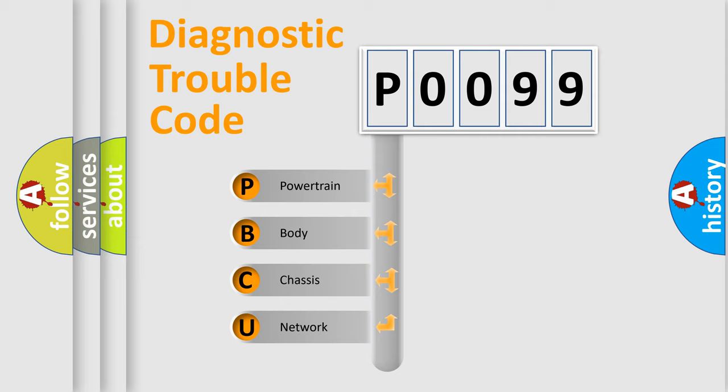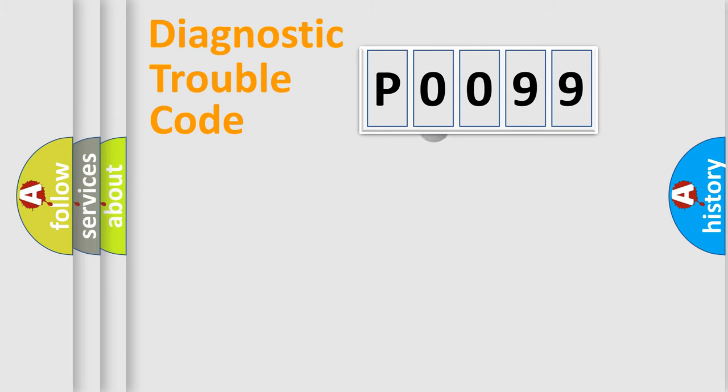We divide the electric system of automobile into four basic units: powertrain, body, chassis, and network. This distribution is defined in the first character code.